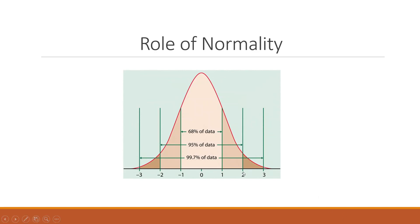As you can see, if we take the mean and go plus or minus one standard deviation, 68% of the data is covered. Plus or minus two sigma covers 95% of the data, and plus or minus three sigma covers 99.7% of the data.